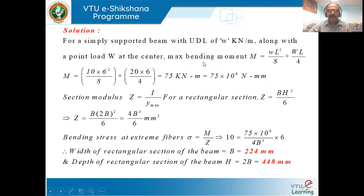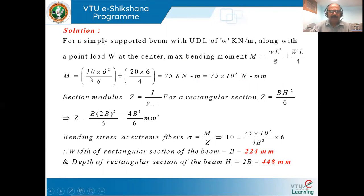For a simply supported beam, the maximum bending moment at the center is WL/4 for a central point load, and wL²/8 for a uniformly distributed load. These are standard relations. So the total bending moment M = wL²/8 + WL/4, where w is the load per meter length of 10 kN/m over a span of 6 meters.